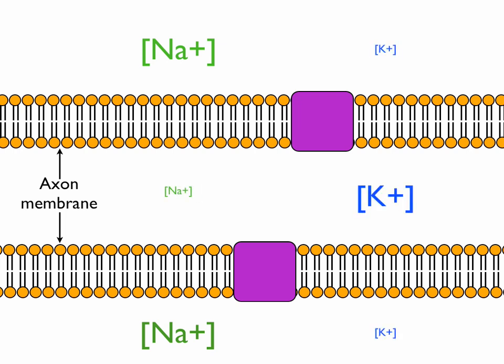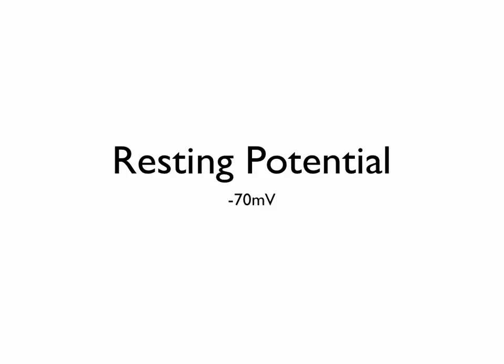Because of the concentration gradient, an active process is needed to maintain this situation, the sodium-potassium pump. This uses energy in the form of ATP to move the ions against their diffusion gradient, and this gives us a resting potential in the neuron, which is about minus 70 millivolts, and it's said to be polarized.